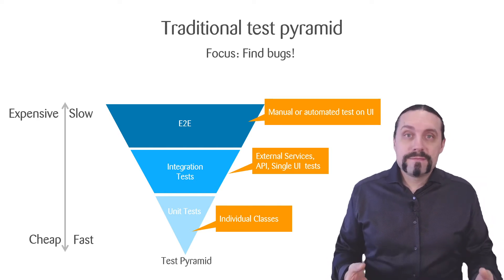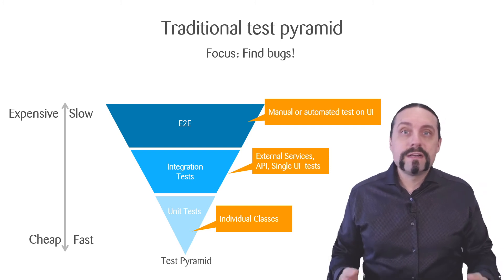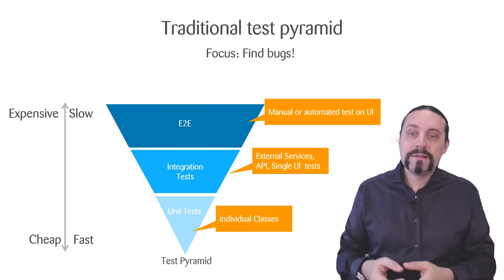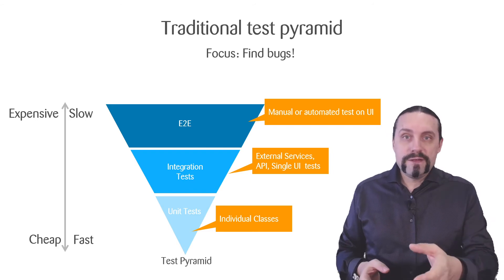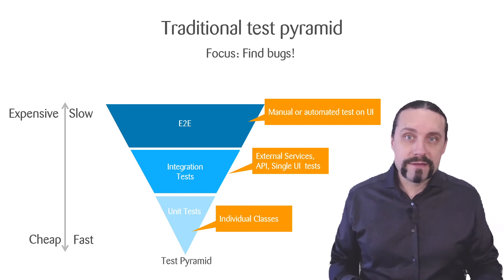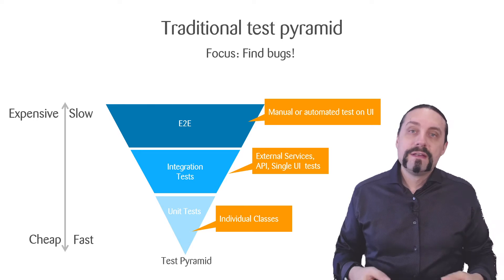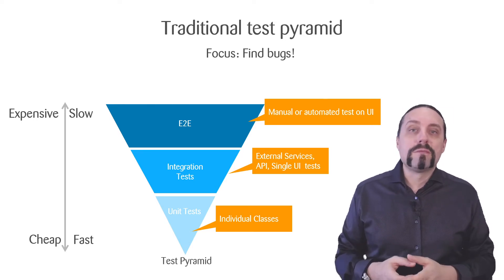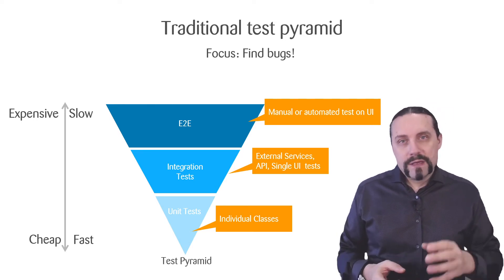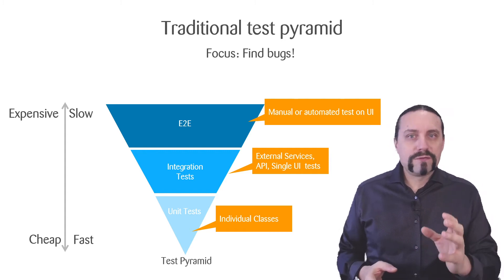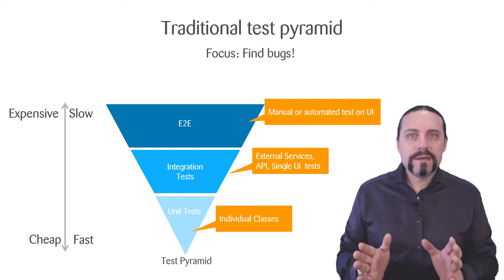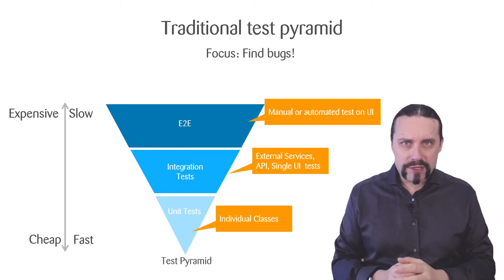This manual testing is not only slow — that's why we usually have six-week testing phases at release cycles — it's also very expensive. And we only have a few unit tests, which are cheap and fast to execute. That's the core problem of the traditional test pyramid: its focus is completely on finding bugs.